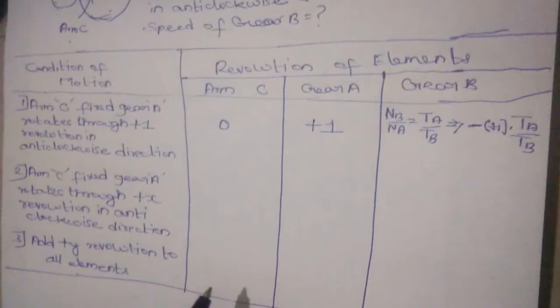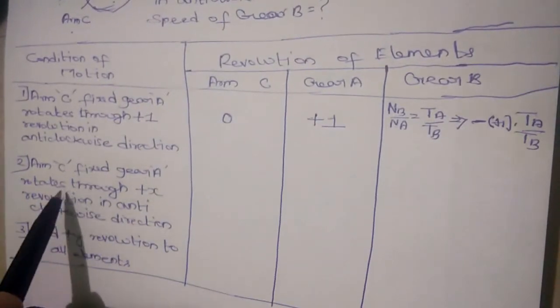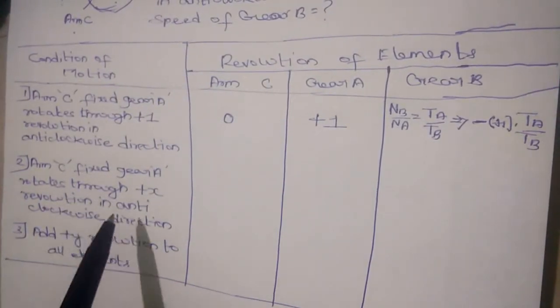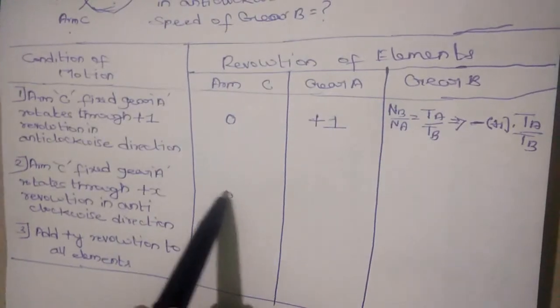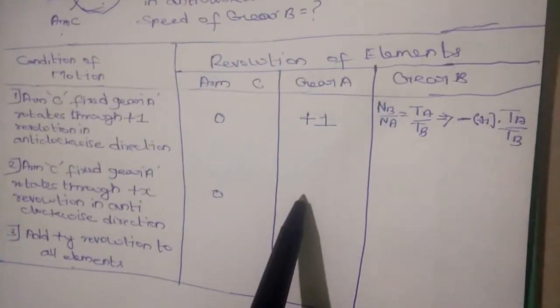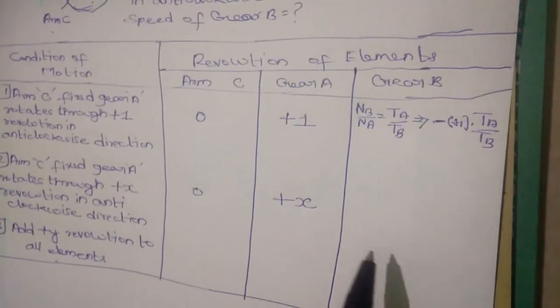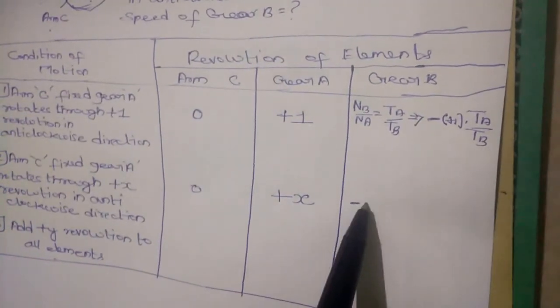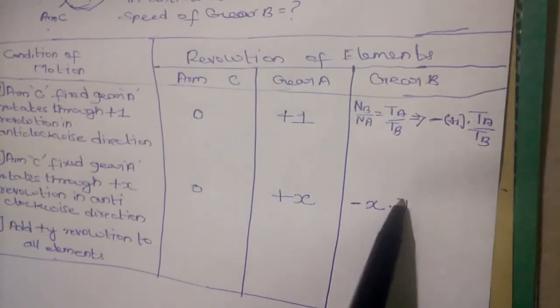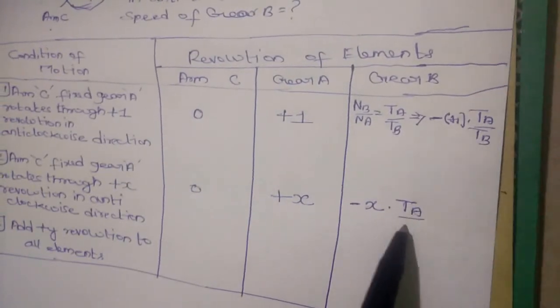Now, arm C fixed. Gear A rotates through plus x revolution in anticlockwise direction. It is zero. Here it makes plus x revolution in anticlockwise direction. Now, multiplying by x gives minus of x into TA by TB.